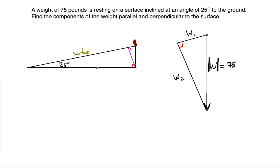We know that the corresponding angle measures of similar triangles are congruent. So the angle corresponding to 25 degrees in the larger triangle must also be 25 degrees in the smaller triangle — the smallest angle here. To relate W1 with W, we use sine, because W1 is the opposite side to the 25-degree angle divided by the hypotenuse. Thus, sine of 25 equals opposite over hypotenuse.